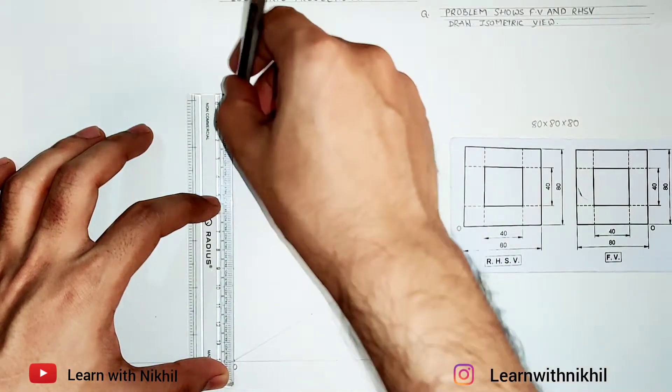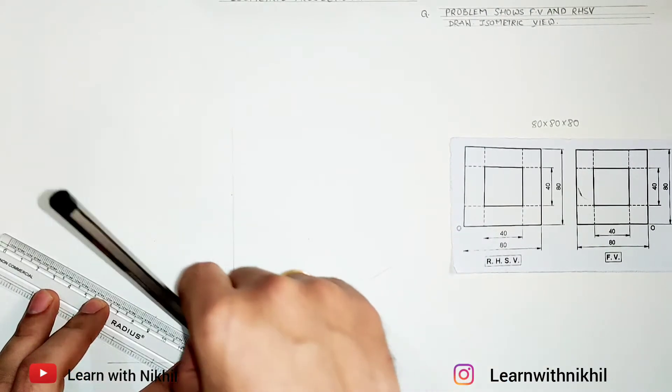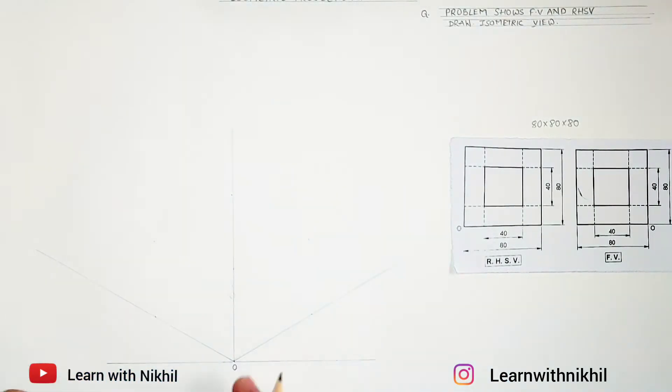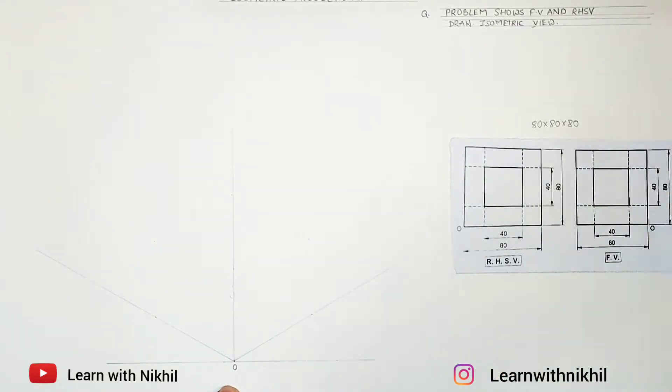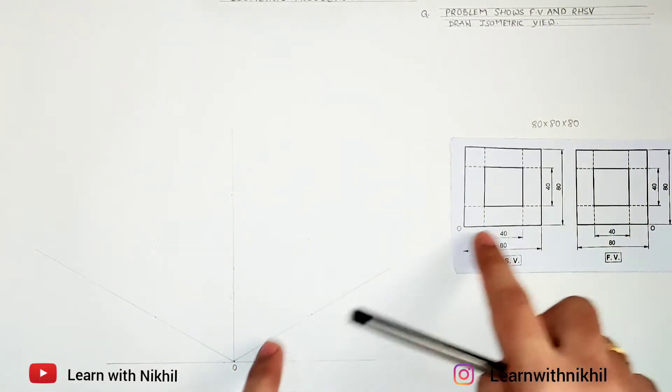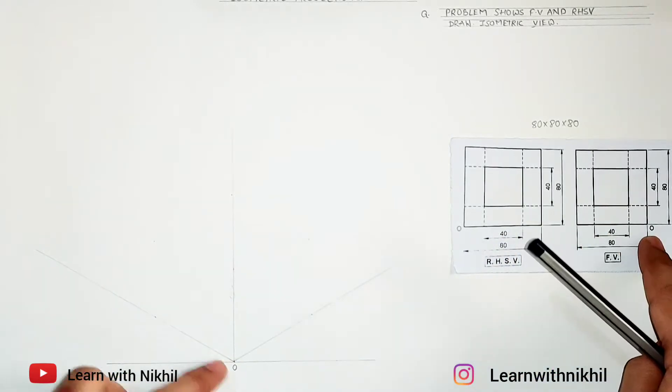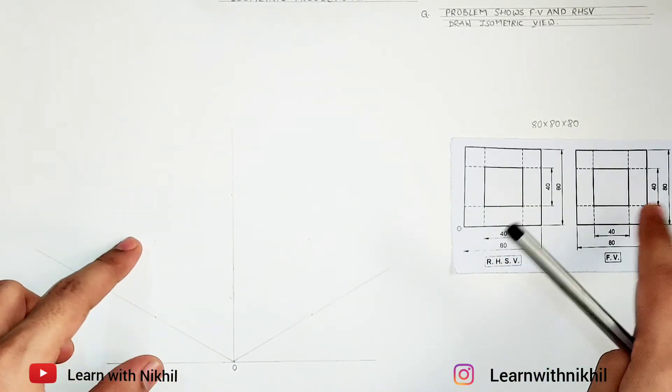Through these points we'll draw lines. Draw it lightly. I will mark the dimension. This is the point O.